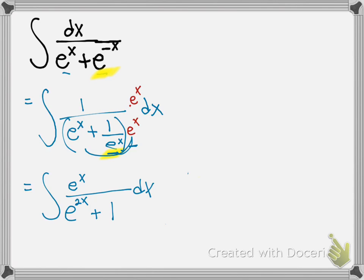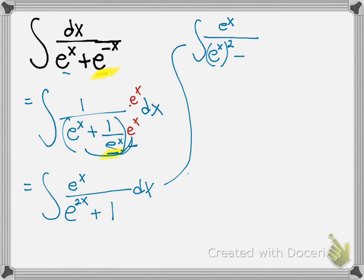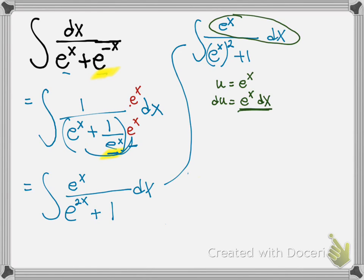I'm going to rewrite this one more time to make it a little bit easier. I'll write e to the x on top, and e to the 2x I'll write as e to the x squared — that helps us visualize what we've got. So then I can do a u-sub. If I let u equal e to the x, then du is e to the x dx, so the entire e to the x dx can be replaced with du.